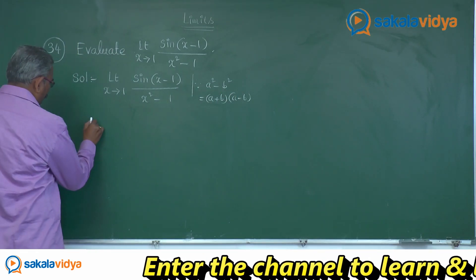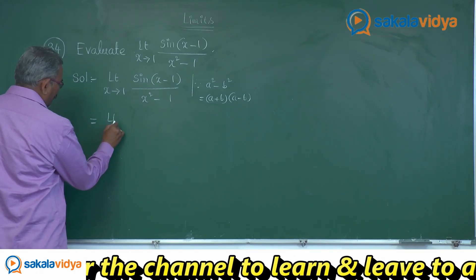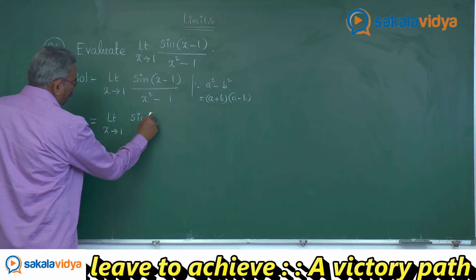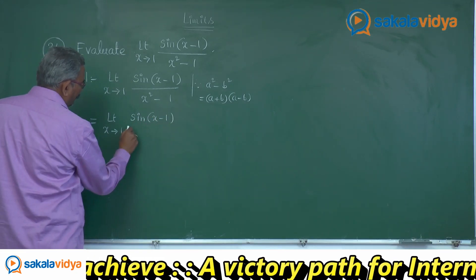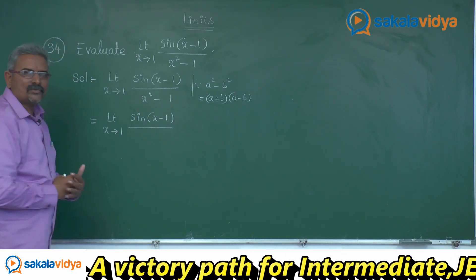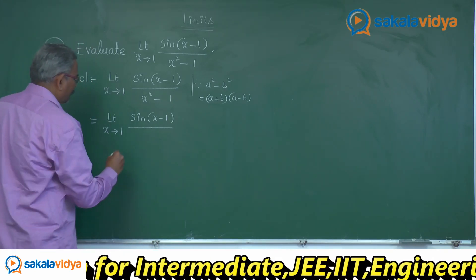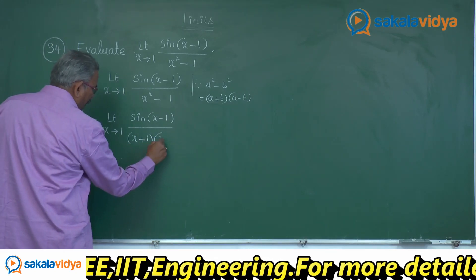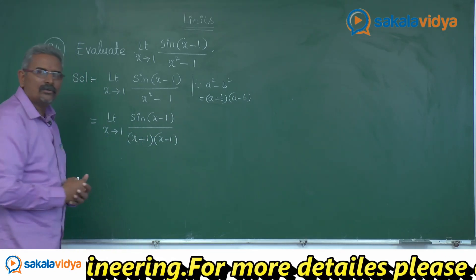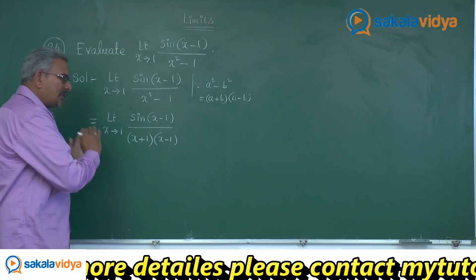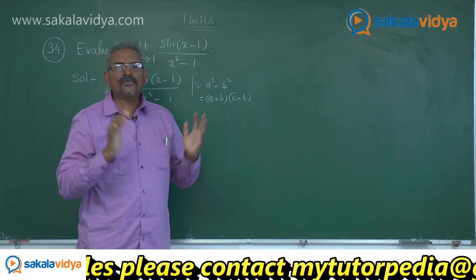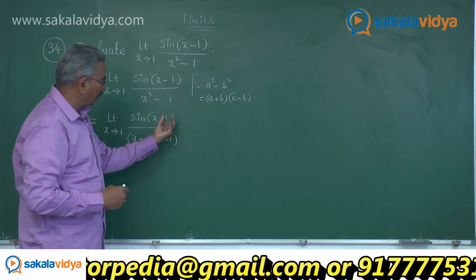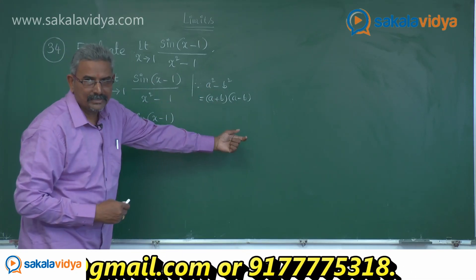So now this can be written as: limit x tends to 1 of sin(x-1) divided by (x+1)(x-1). This can then be written as the product of two functions: sin(x-1)/(x-1) multiplied by 1/(x+1).